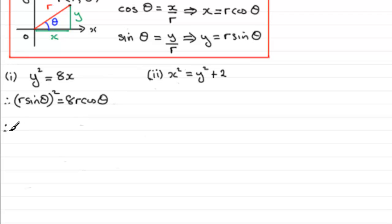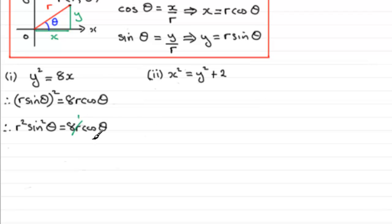If we square out the bracket, we therefore have r squared sine squared theta equals 8r cos theta. Each term has an r in it, so we divide both sides by r — that cancels out, and r into r squared just leaves us with r. Now we can divide both sides by sine squared theta, which leaves us with r equalling 8 cos theta divided by sine squared theta.